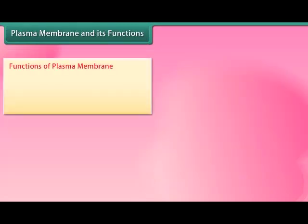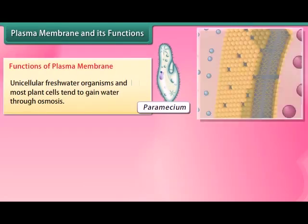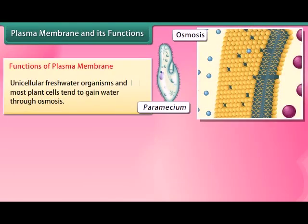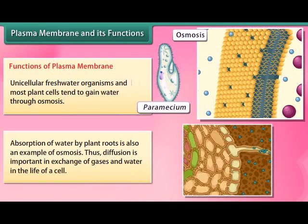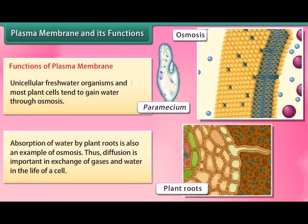Unicellular freshwater organisms and most plant cells tend to gain water through osmosis. Absorption of water by plant roots is also an example of osmosis. Diffusion is important in the exchange of gases and water in the life of a cell.